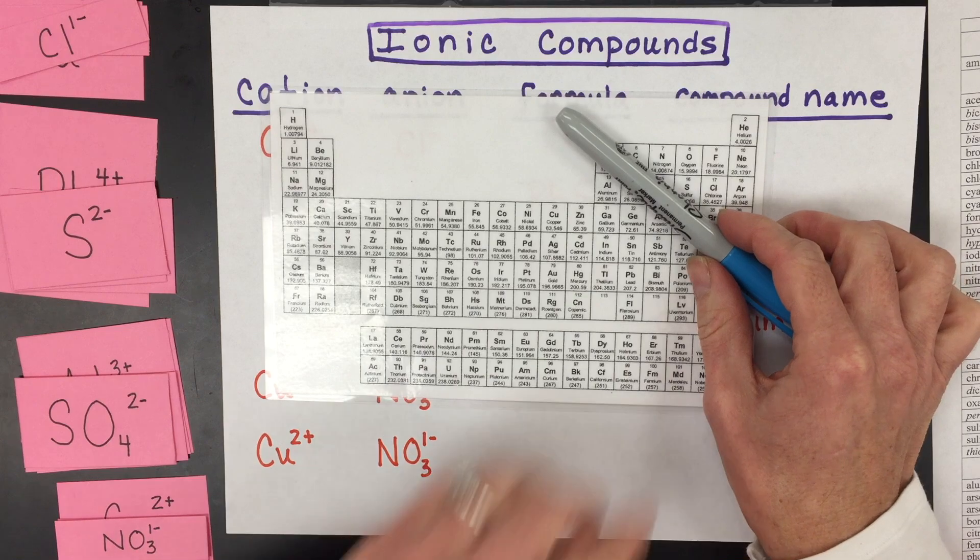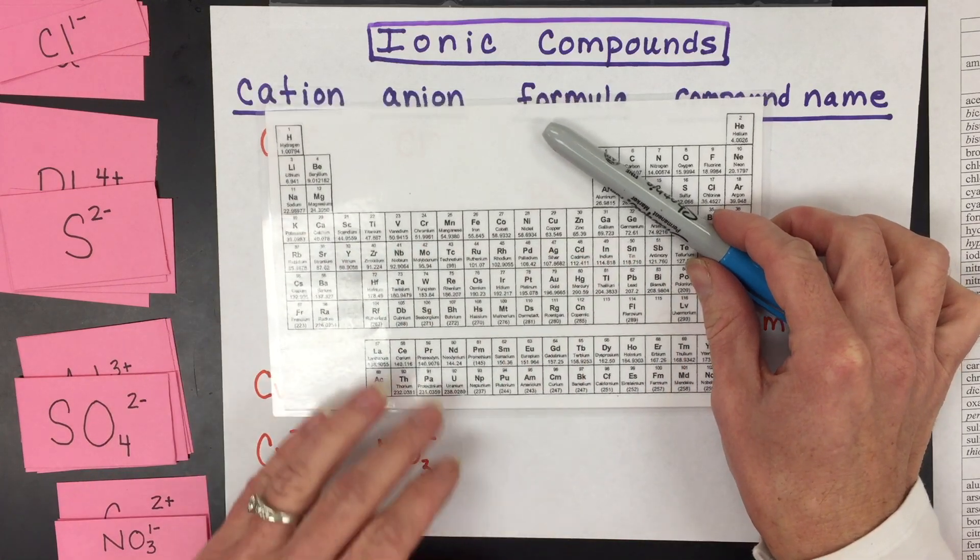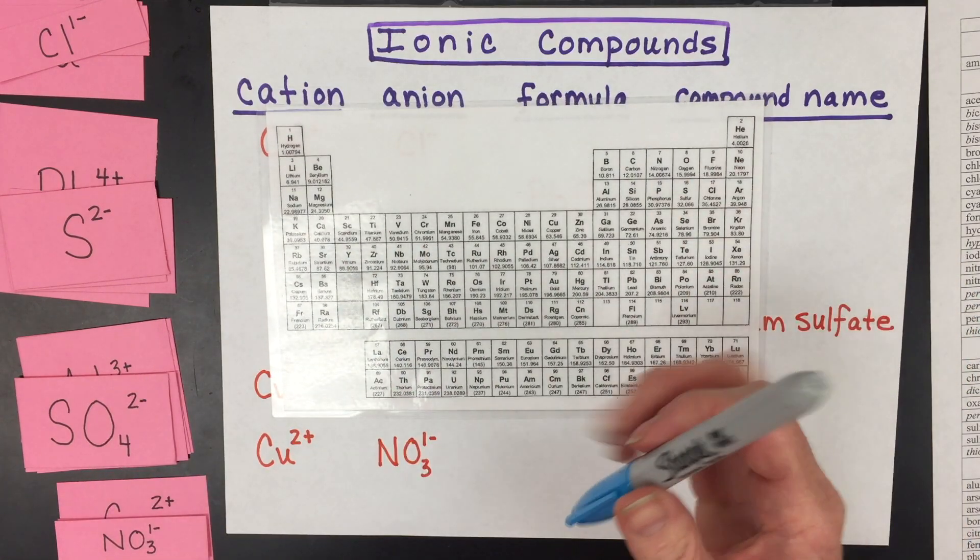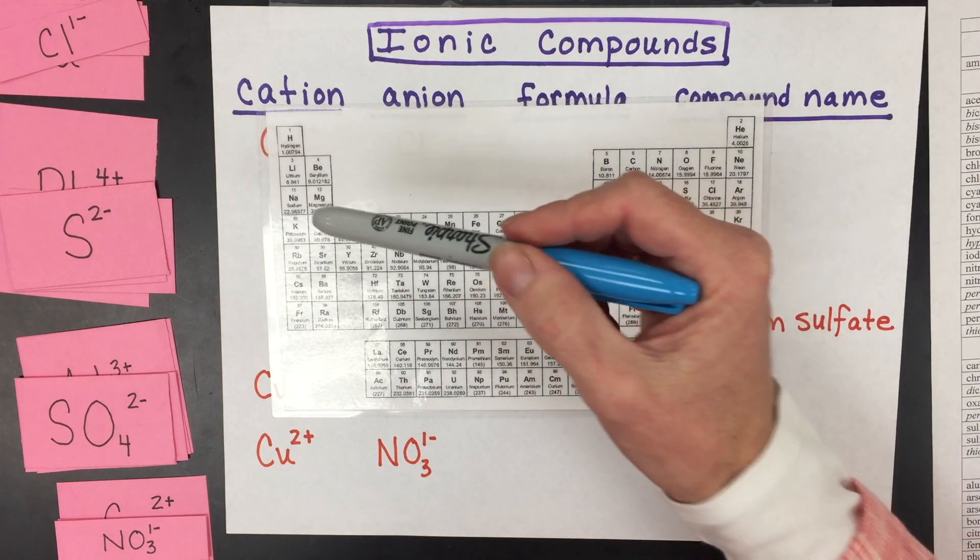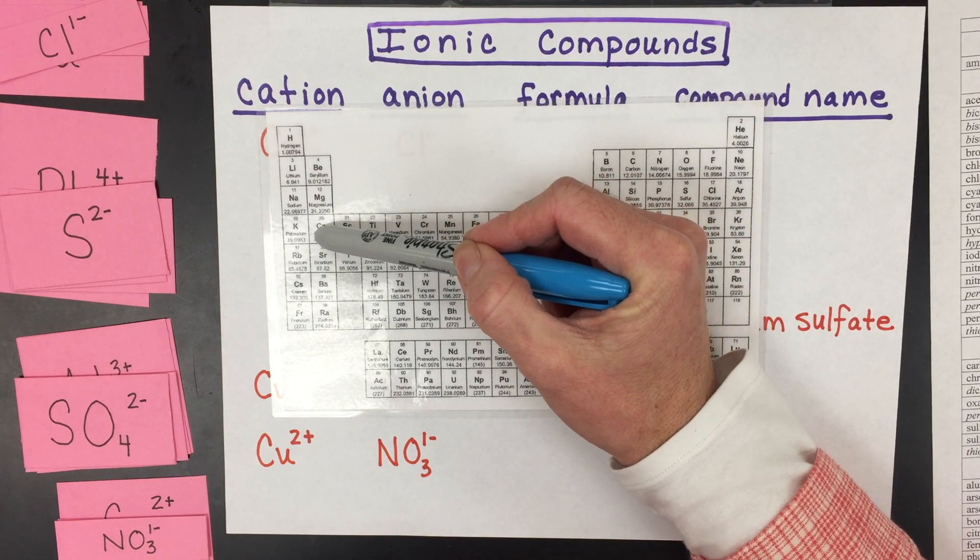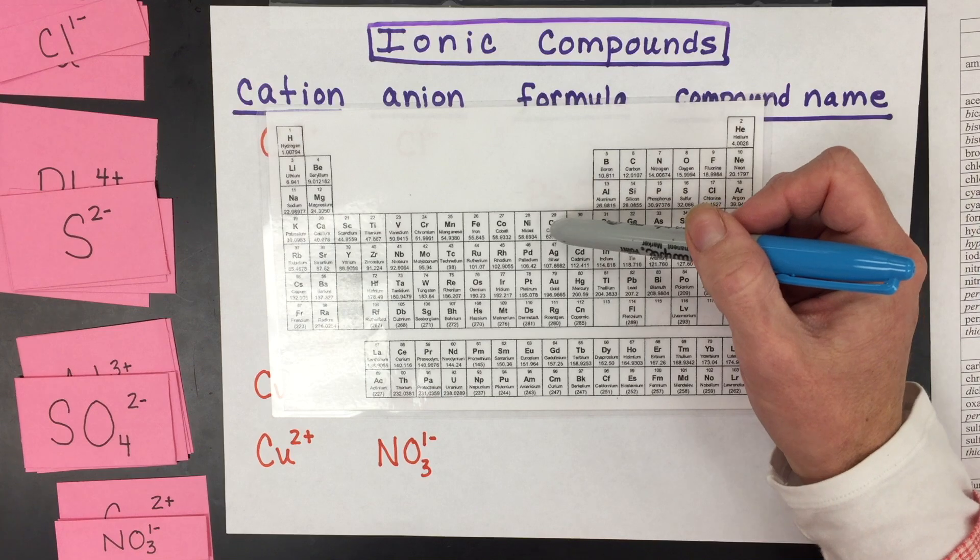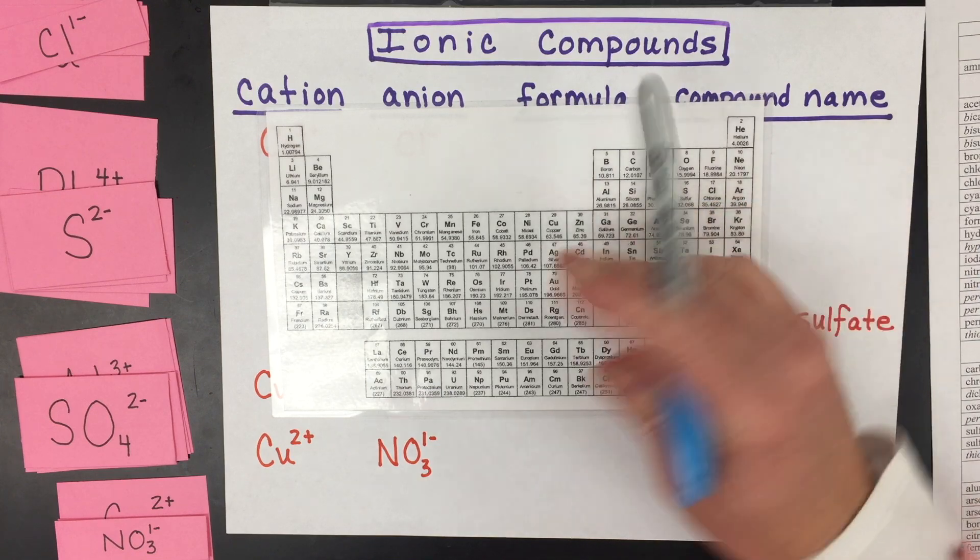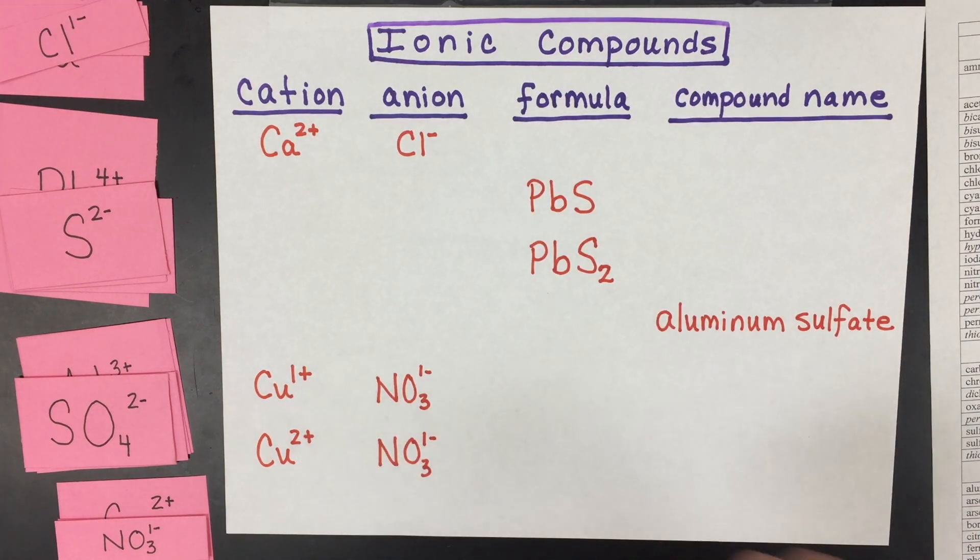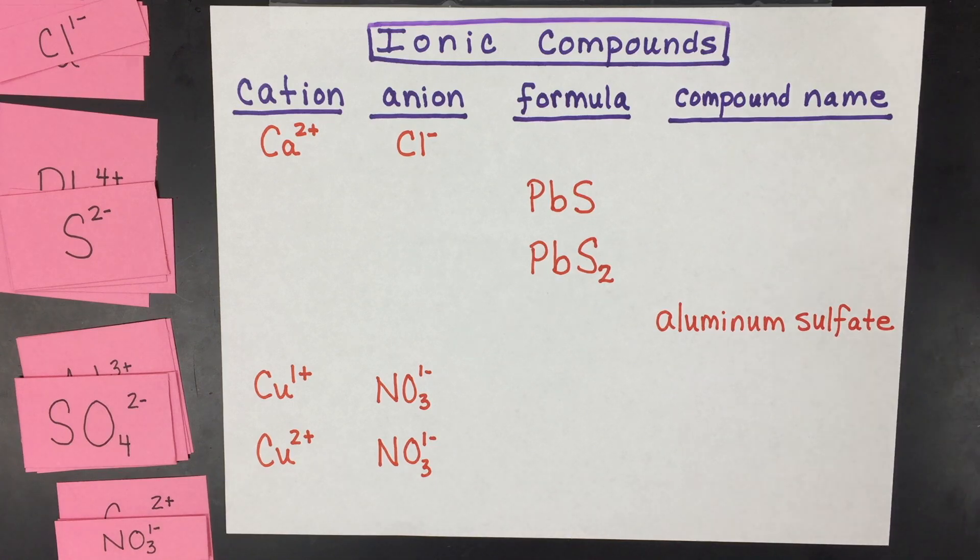The metals can carry a specific charge, like calcium is going to be a two plus. However, an element like copper could have a plus one or a plus two. So you're going to need to have a list of those ions readily available.